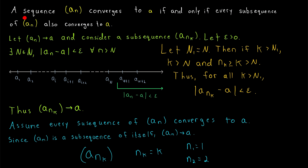So a sequence converges to a limit if and only if all of its subsequences converge to that same limit. This gives us a really slick way to prove that a sequence diverges, and we'll learn more about that in future lessons.